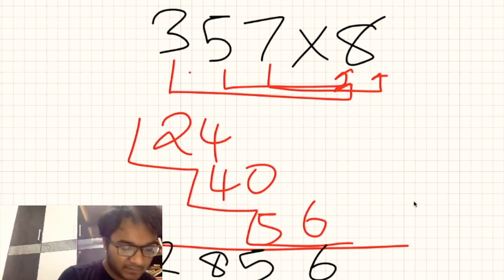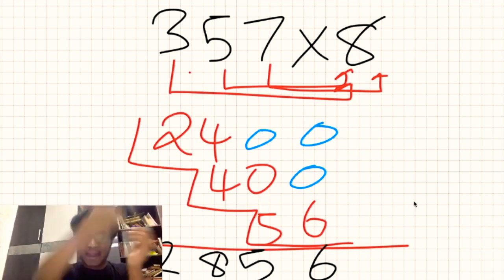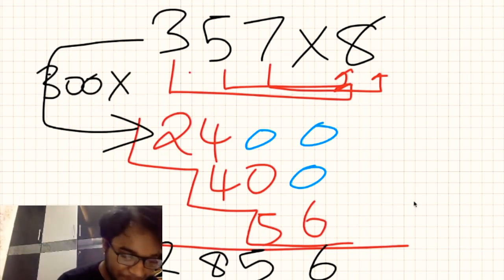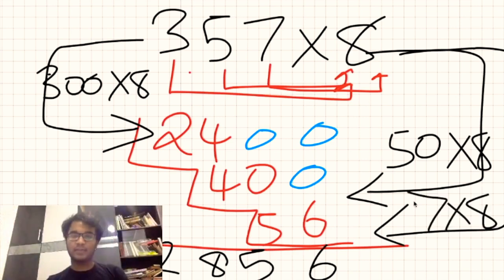So why does this work? It's because we are looking at numbers as they are. 24 is nothing but 2400 here with the shift is nothing but 400. And the step method makes us visualize this in that way where our initial multiplication represents 300 times 8. This multiplication right here represents 50 times 8 and this multiplication right here represents 7 times 8. And this is a very good way because we are looking at number system as a base 10 system and this makes us do our calculations real quick.